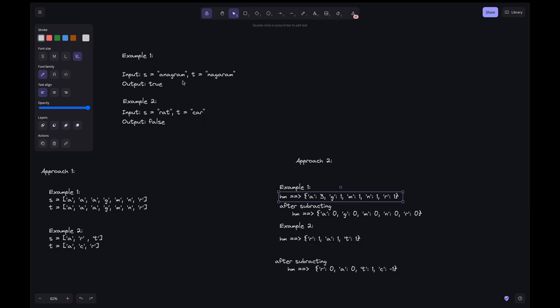To explain the approach: first we iterate over s and form a hash map that accounts to this one. Then while subtracting in the next step, we do subtraction for each character and get the hash map like this. We can see each character's count is zero, so it's definitely an anagram. For example two, after the first iteration we get all the letters' counts. After subtracting, we see c is minus one and t is one. This means there's a mismatch, so it's not an anagram. We return false.